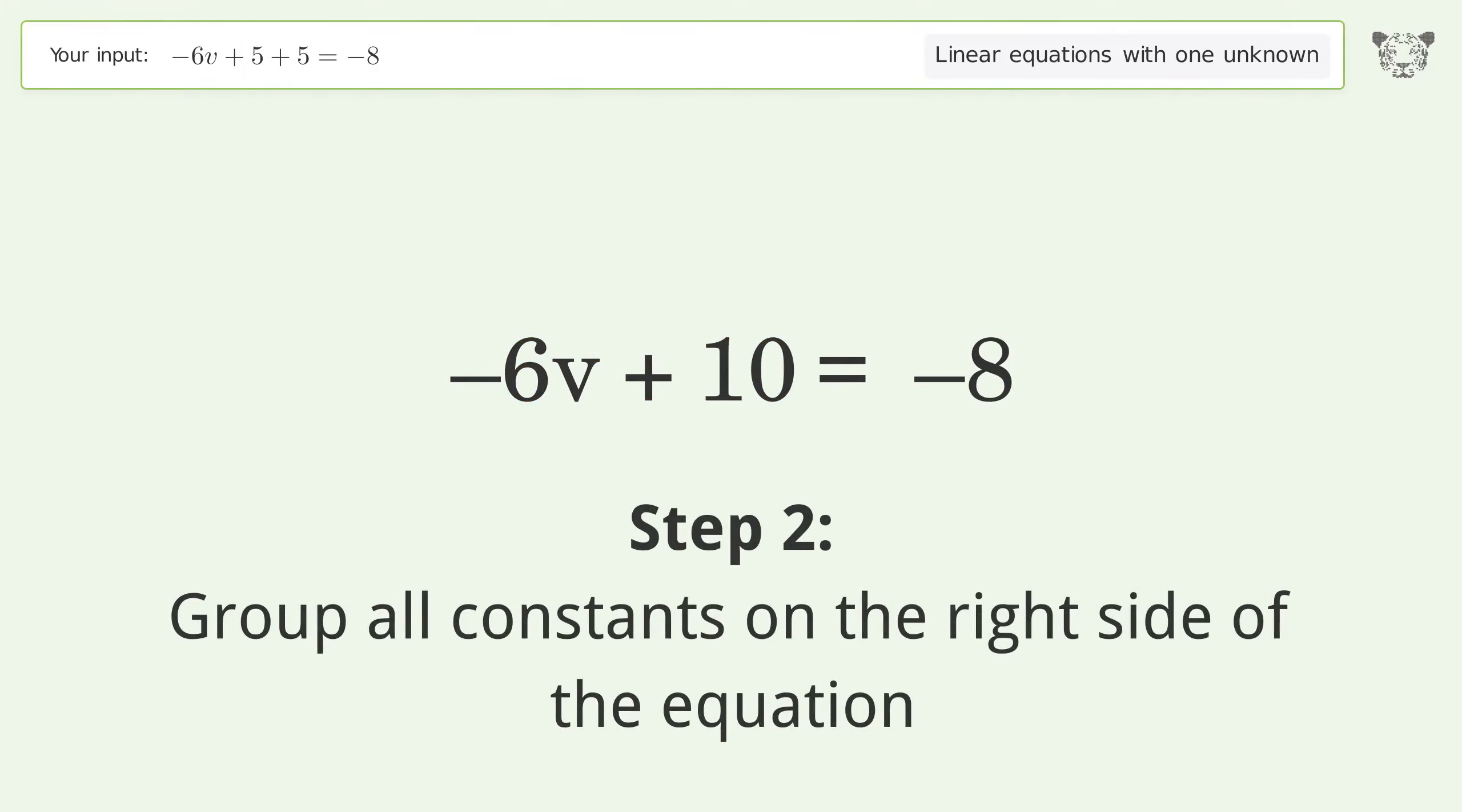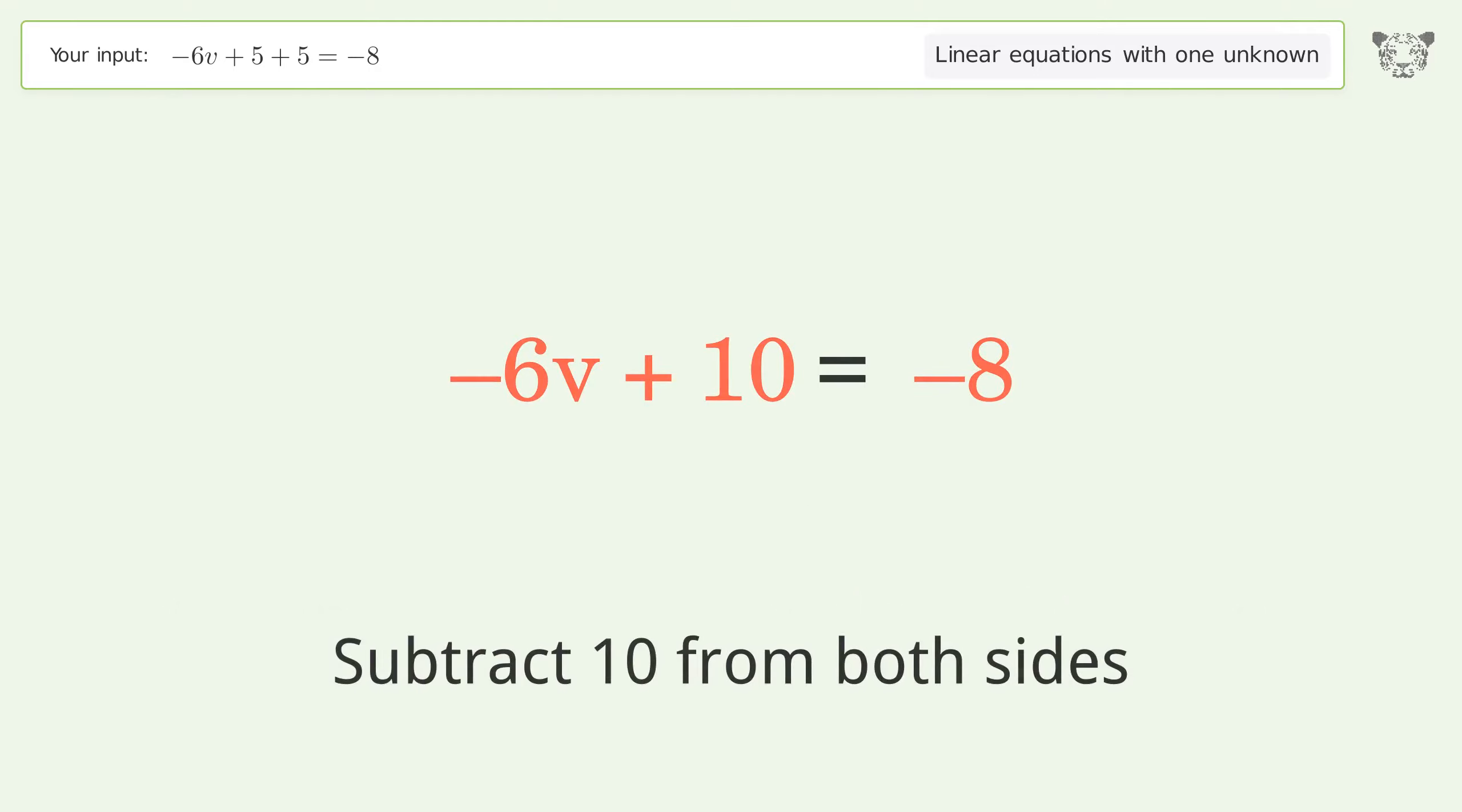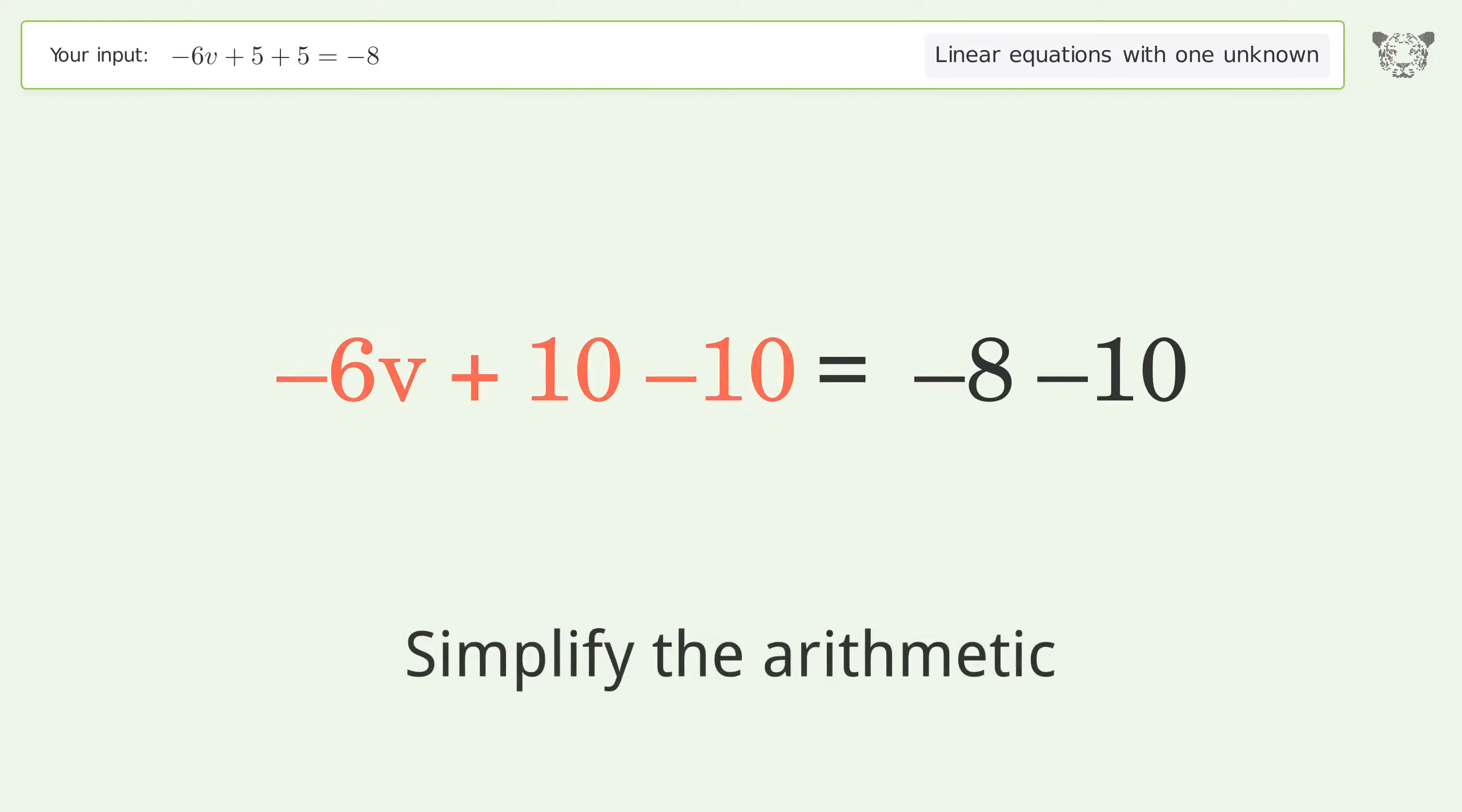Group all constants on the right side of the equation. Subtract 10 from both sides. Simplify the arithmetic.